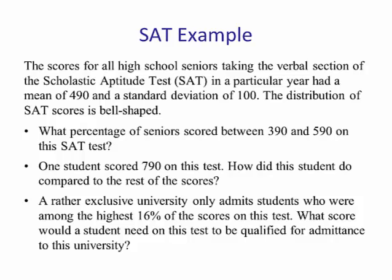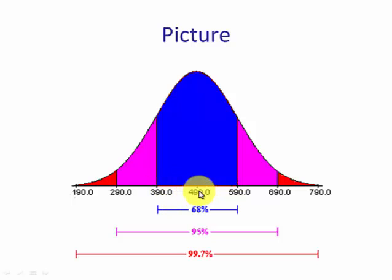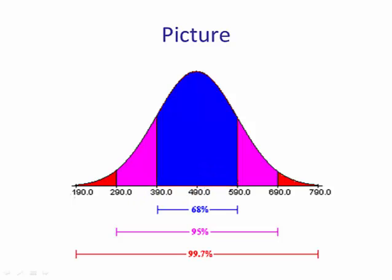First question: what percentage of seniors scored between 390 and 590? Drawing a picture will help. We put our mean of 490 in the middle. Going one standard deviation below gives 490 minus 100, which is 390, and one above gives 490 plus 100, which is 590. So the answer is 68% — according to the empirical rule, 68% of the high school students taking the verbal SAT will have scores between 390 and 590.